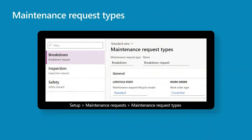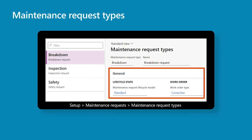Next we set up maintenance request types, which categorize maintenance requests. For Purple Pillow Company we created request types for breakdown, inspection, and safety. A maintenance request type defines the affiliation with the lifecycle state group, so we select our previously created lifecycle model on the general tab. We can also select a work order type for when a maintenance request is converted to a work order — for the breakdown request type, we selected a corrective work order type.